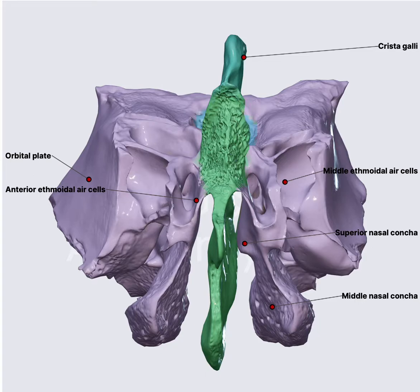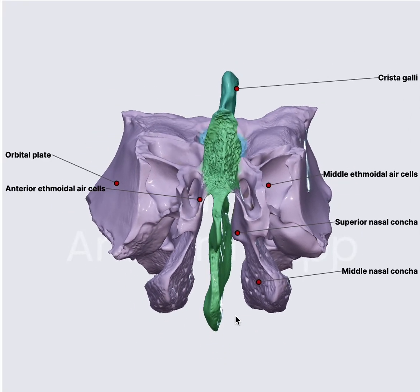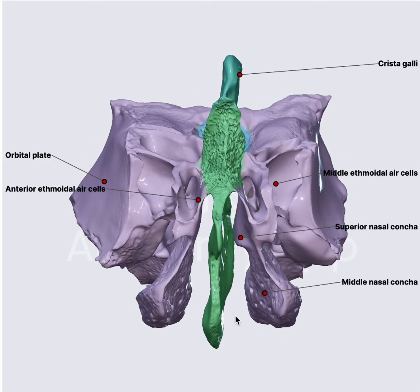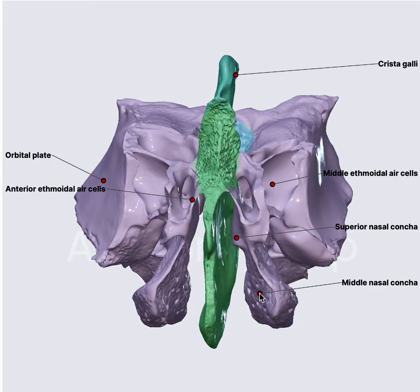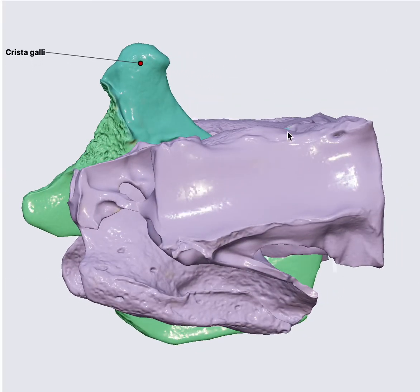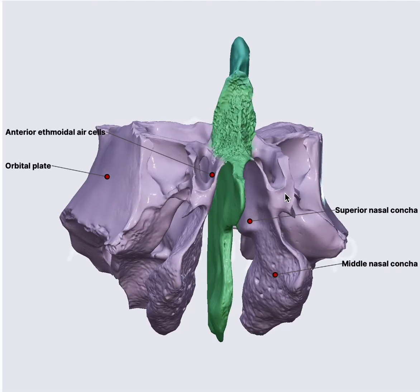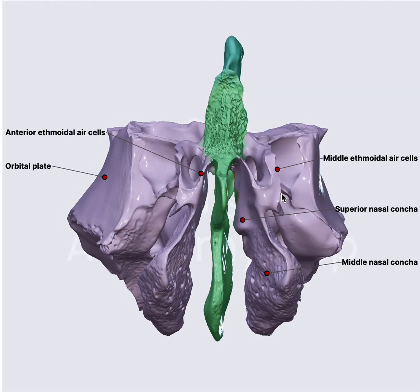In today's 3D anatomy series we are going to have a look at the ethmoid bone — the bone which demands serious attention. Why is it so? Just because it is close to important structures, one of the most important being the brain which is situated here. It is also a very thin bone.